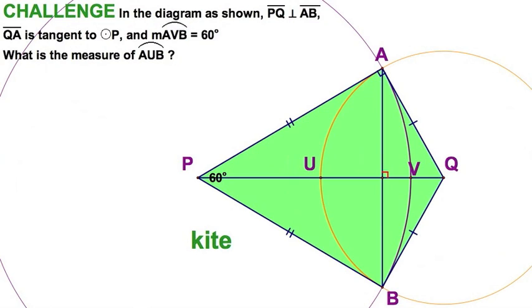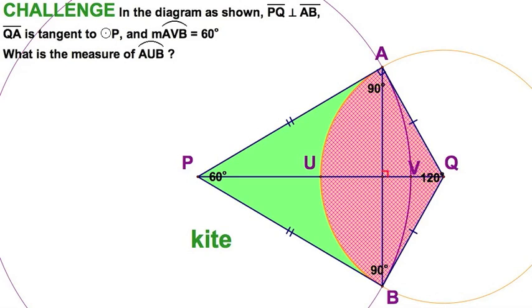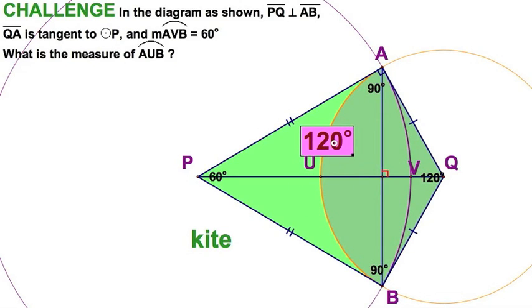Since I've got a 90 degree angle here, I must have another 90 degree angle down here. So I've got my 90, my 90, 60. And what's left, the other angle in the quadrilateral, must be 120. If this is 120, then that intercepts this arc. And this arc must have a measure. Arc AUB must have a measure of 120 degrees. That's the easiest solution I can see for this one.